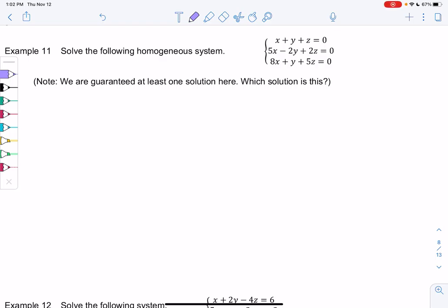Section 9.1, Example 11. Let's solve the following homogeneous system. What does homogeneous mean? It means the right side equals zero.